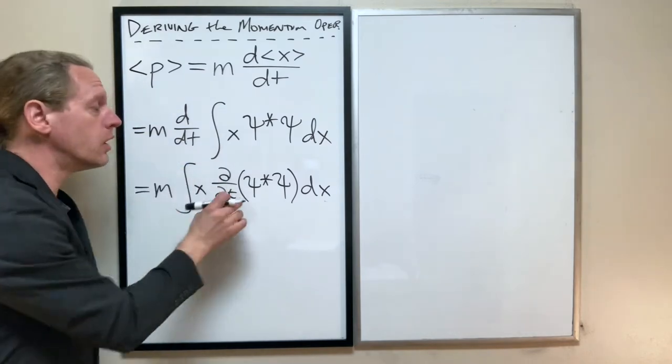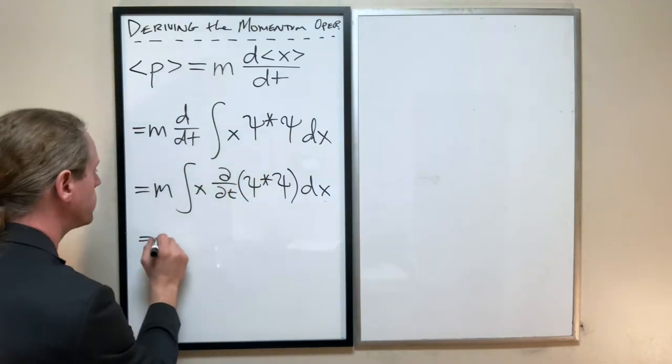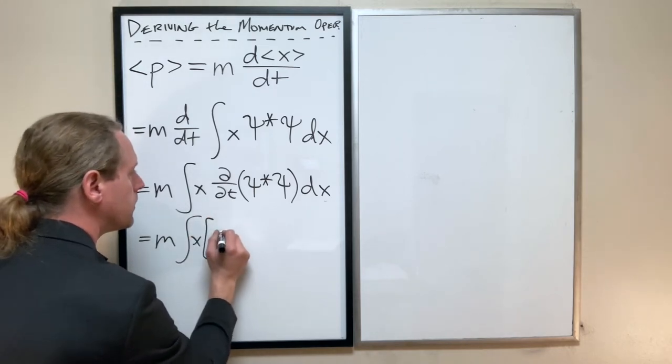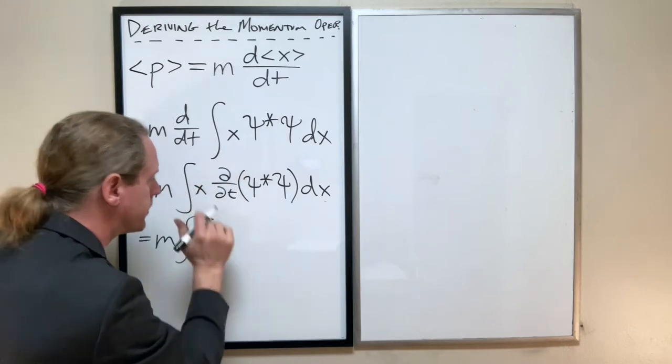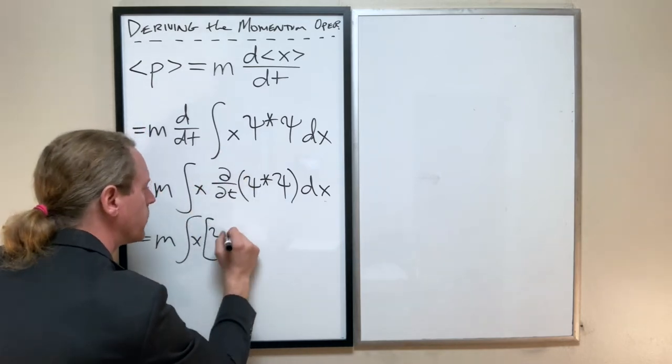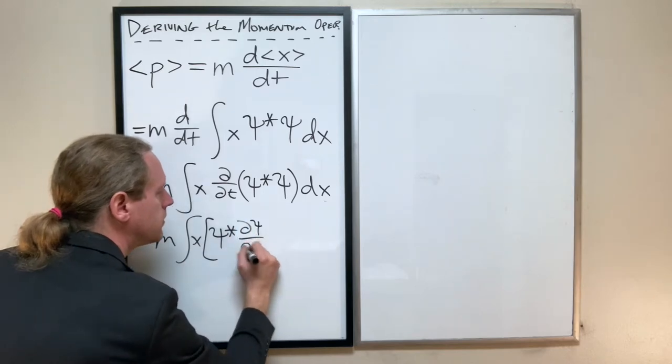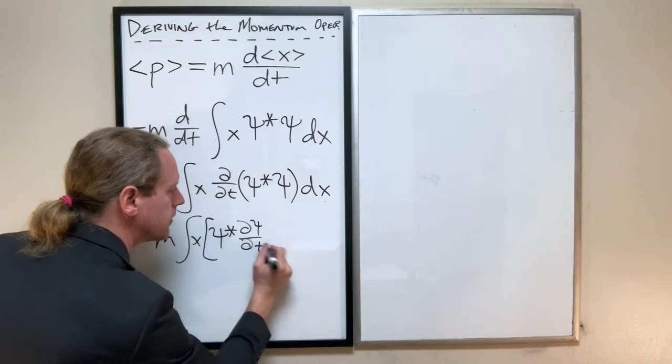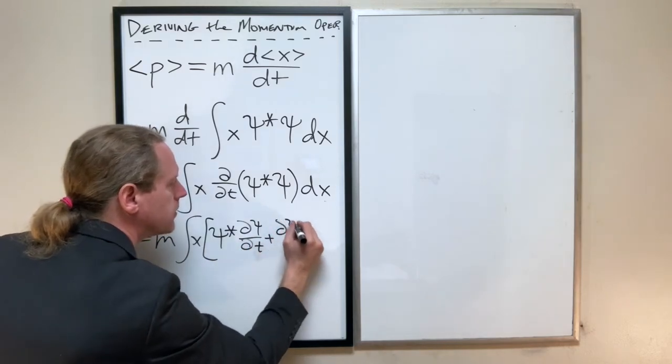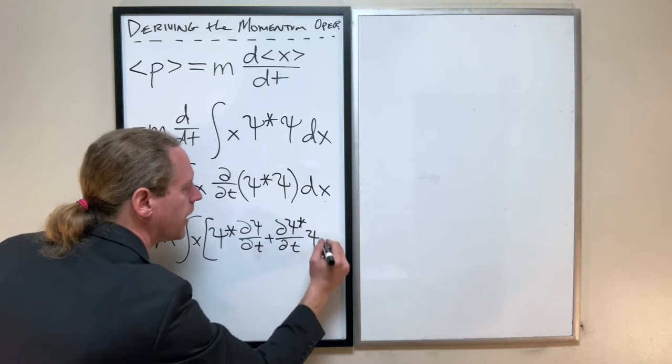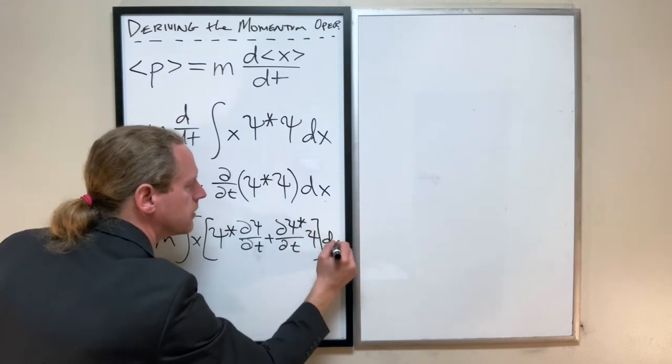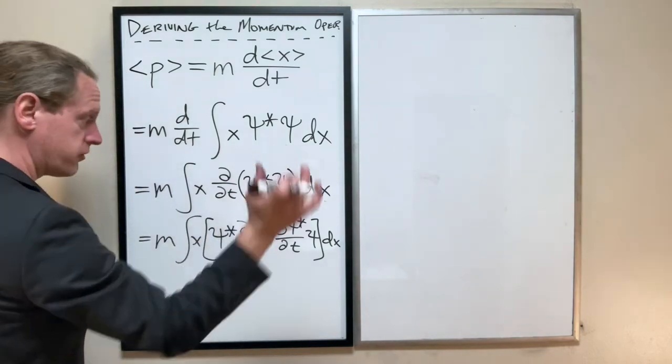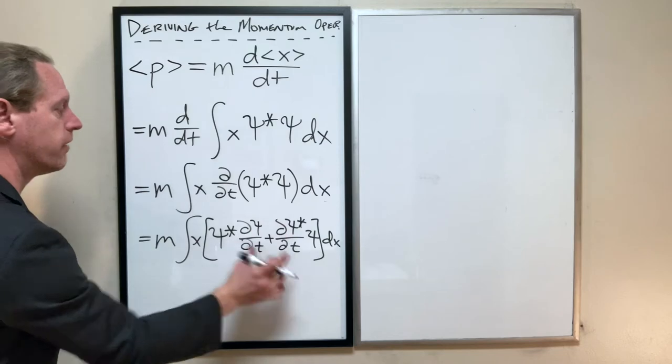At this point, we can now use the chain rule. So this is M times integral of X, and I'll write it like this: Psi star dPsi/dt times X plus dPsi star/dt times Psi dx. Make sure you understood how we got from there to there. It's simply the chain rule of differentiation.